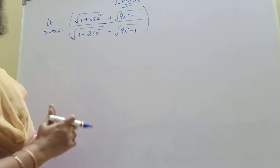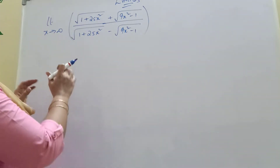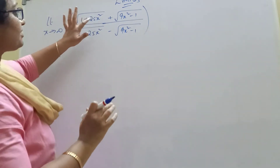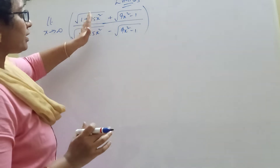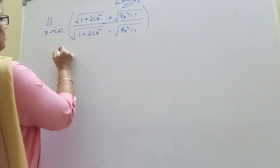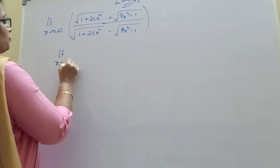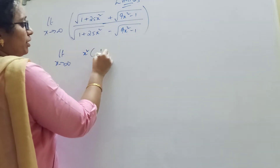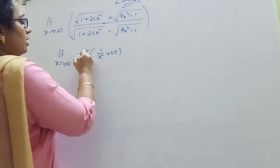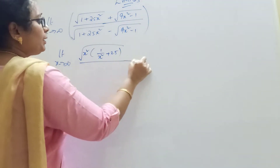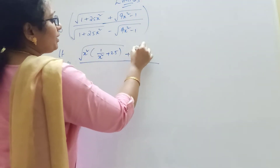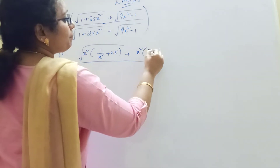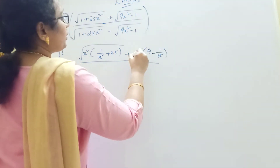Okay, x tends to infinity, x square. We are discussing: limit x tends to infinity of x square. We are discussing 1 by x square plus 25 — that is root law. Like that, every part — 9 minus 1 by x square. Root law, like that, down law.